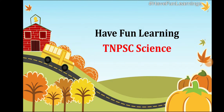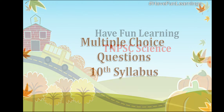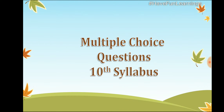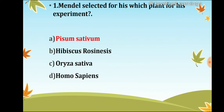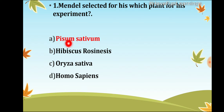Hi friends, welcome to our YouTube channel 'Have Fun Learning'. In this video we will talk about TNPSC science-related MCQs based on the 10th syllabus. The first question is about Mendel's selector plant for his experiment. Mendel selected Pisum sativum, that is green peas, and from this plant he selected specific characters.